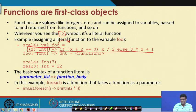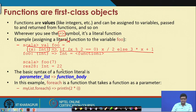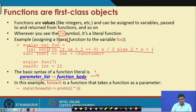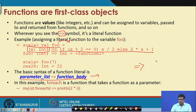For example, in this case it checks: if x modulo 2 is 0 then it returns x / 2, otherwise it returns 3x + 1. So when you pass 7 it returns 3 × 7 + 1 = 22. In general, a function literal has this form: the parameter list followed by the => symbol followed by the function body.